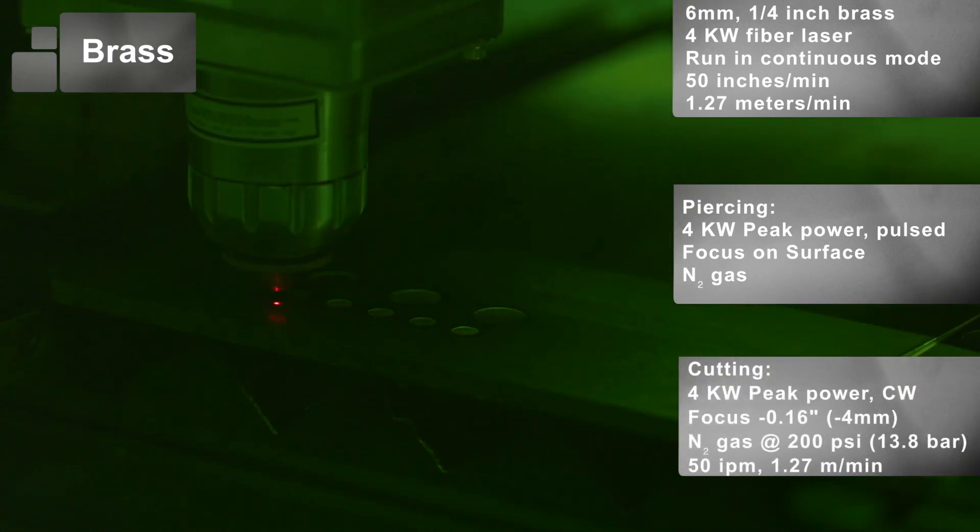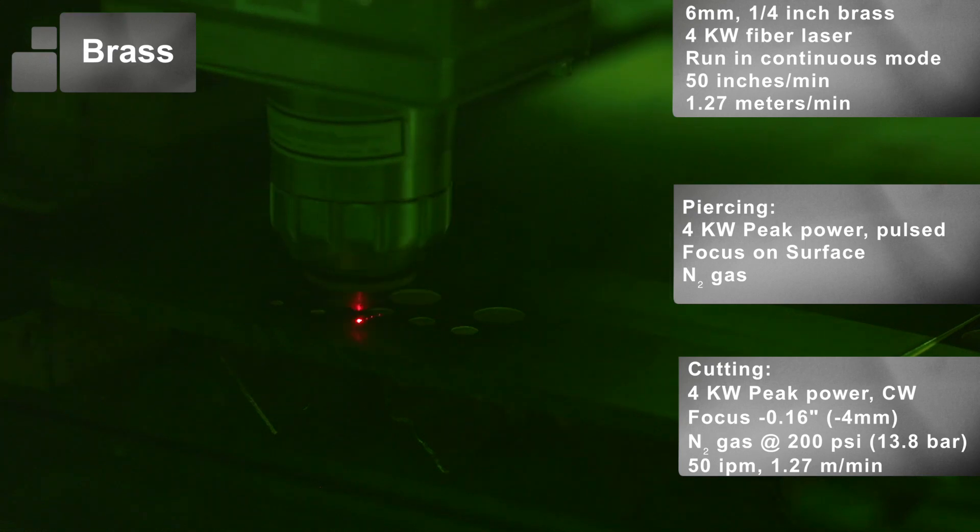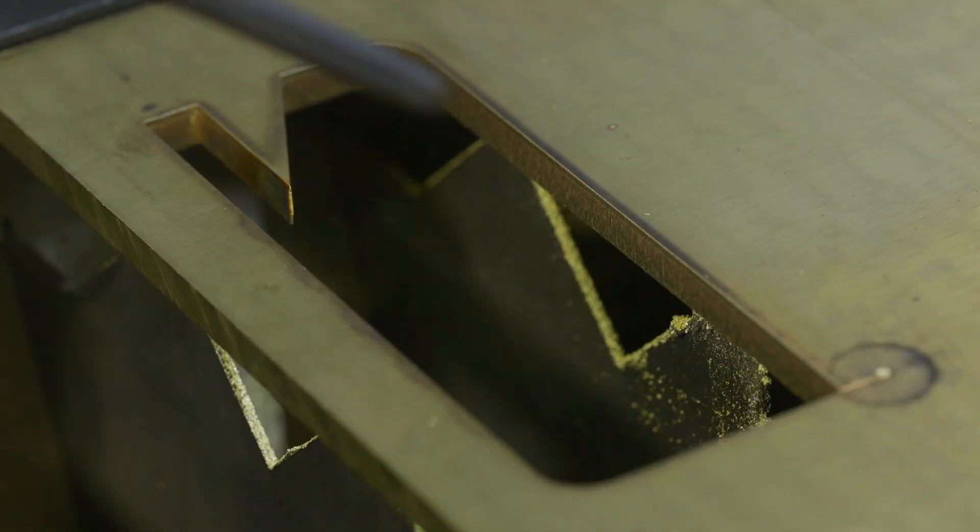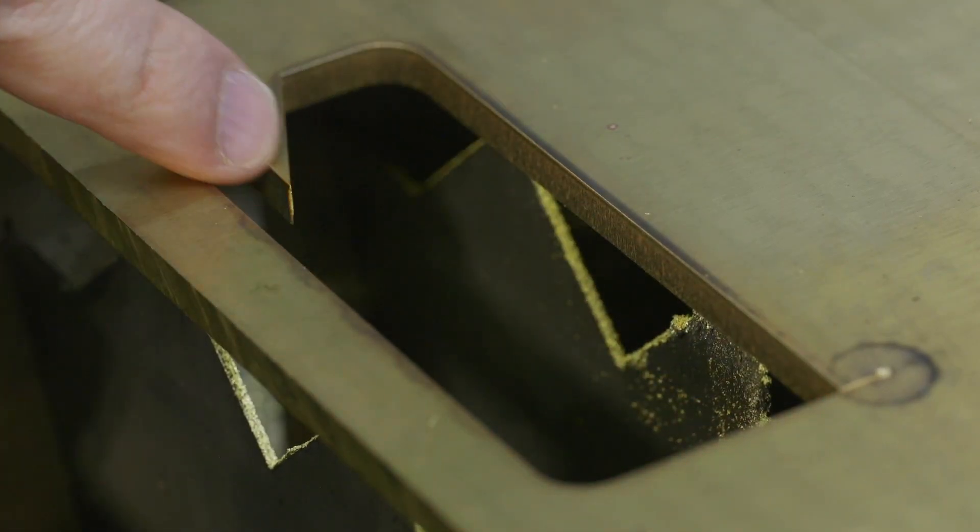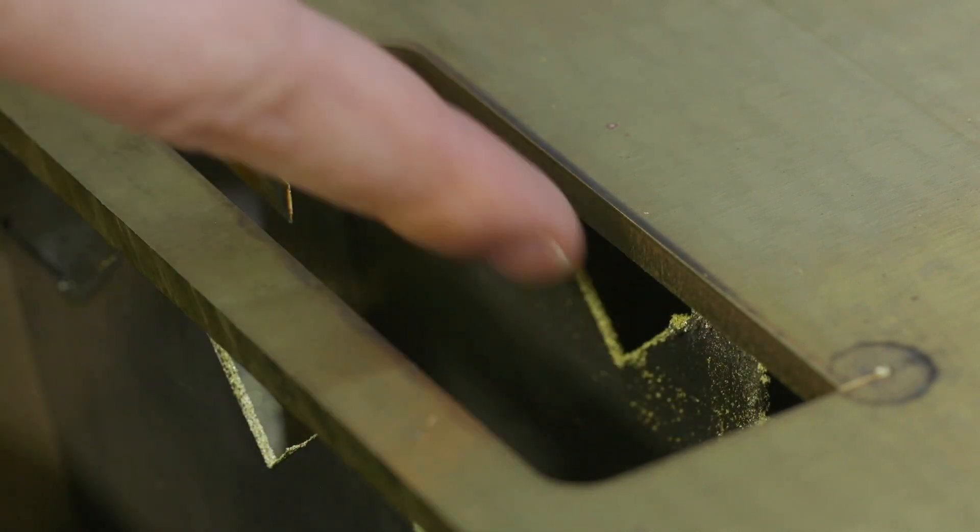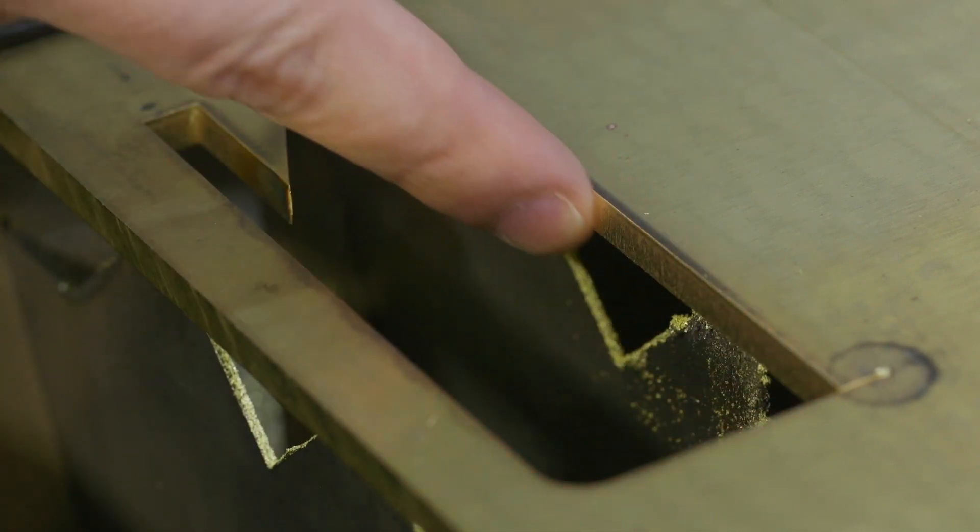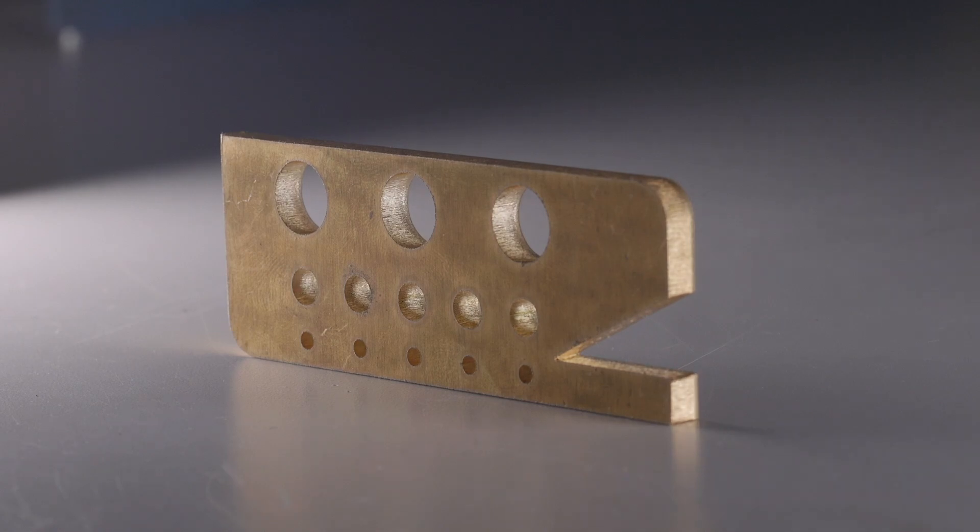For cutting to get the good quality cut, dross-free edge, I need to focus down about 4 millimeter or 0.16 inch into the material. The cut quality should be uniform across the part and it should be smooth and dross-free as you see.